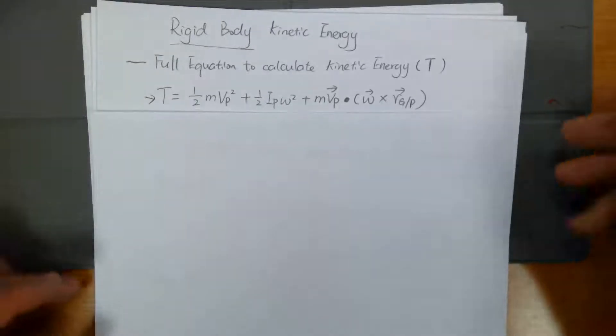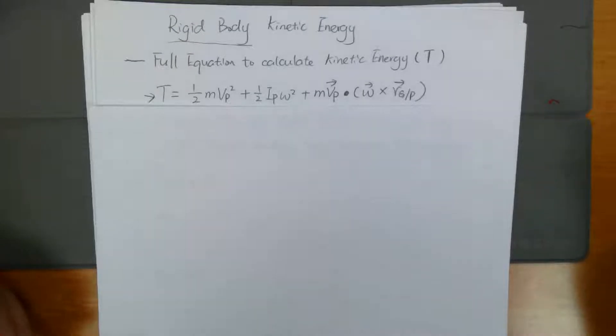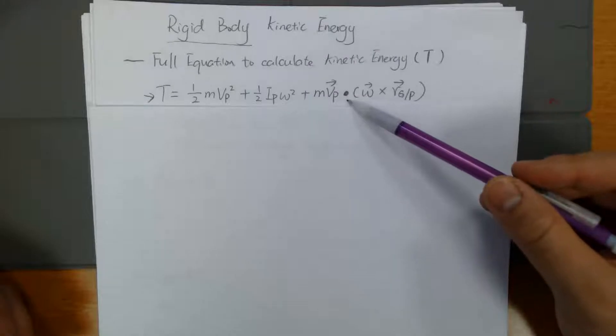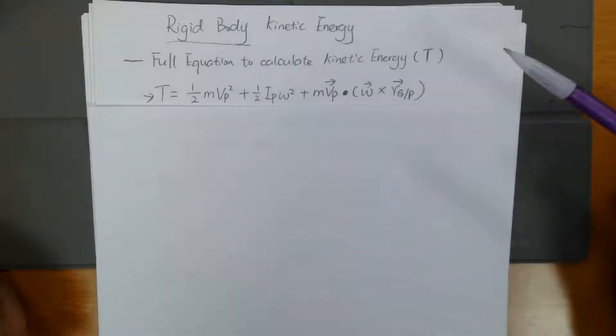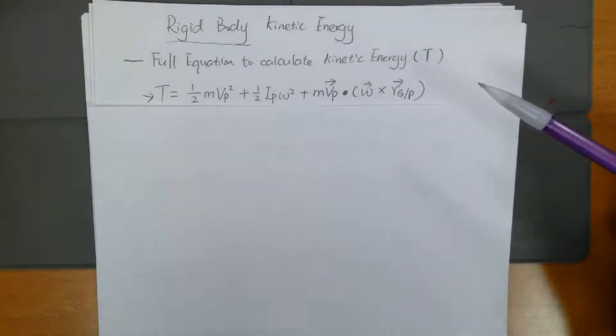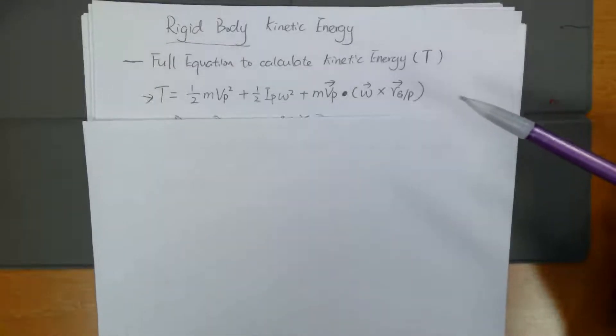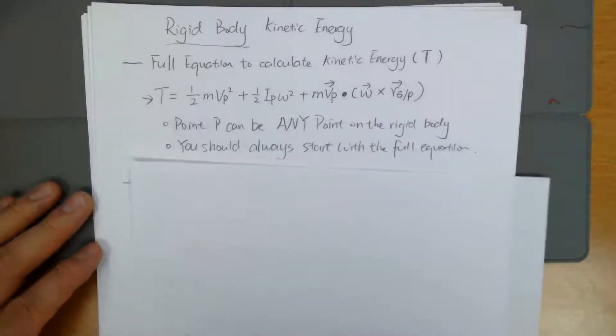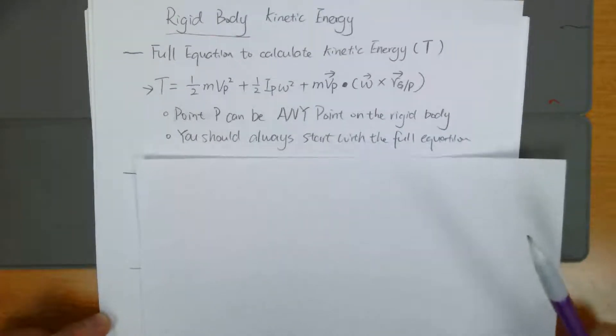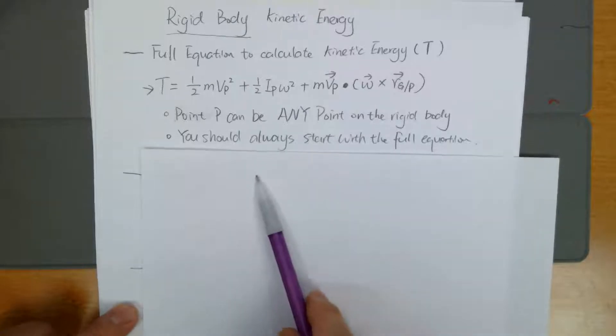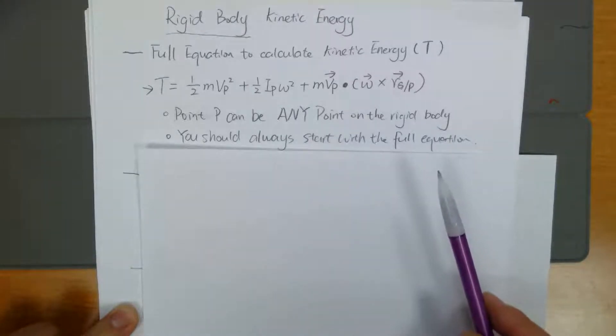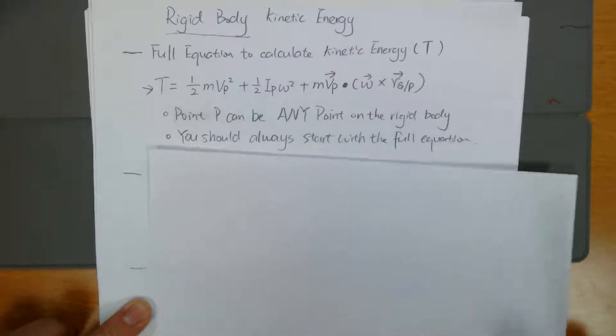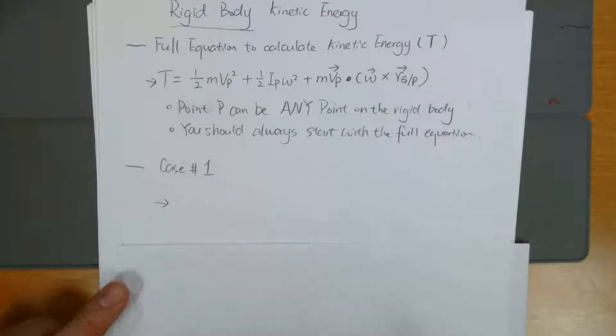So today I'm going to talk about what are the ways we can simplify this equation. This is a pretty long equation and involves dot product and cross product. It can be pretty hard to solve. And so we have two different ways we can simplify this kinetic energy equation calculation. But something to remember is you should always start with this full equation, then think about how to simplify it.